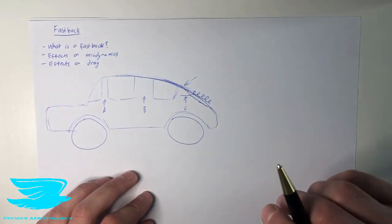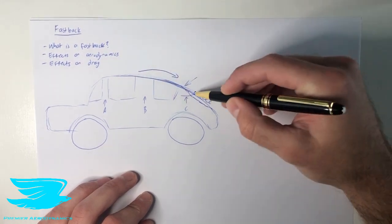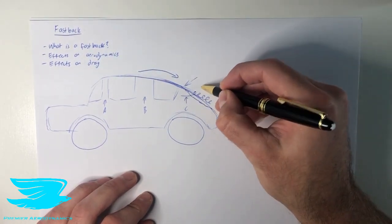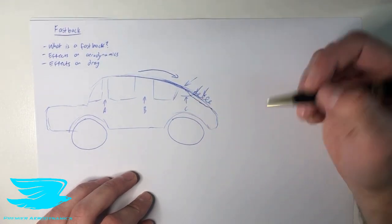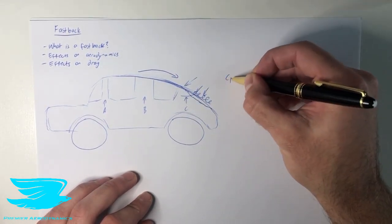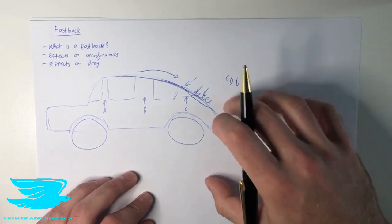This happens on fastbacks, and it's very important because the air now that's coming over reaches this vortex. And the vortex now pushes the air down and keeps it attached over the back window and the back of the car. What this does is the drag coefficient now drops. And this makes the car very aerodynamic.